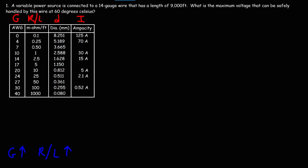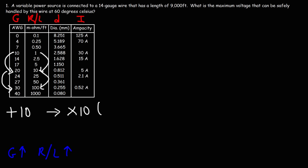The second thing to notice is that as the wire gauge increases by 10, the resistance increases by a factor of 10. So going from gauge 20 to 30, the resistance increases from 10 to 100 milliohms per foot. An increase of 10 in the wire gauge leads to a tenfold increase in resistance.